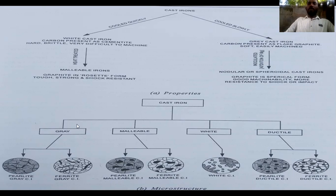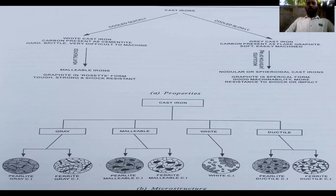In our previous class, we discussed white cast iron, gray cast iron, malleable cast iron, and nodular or graphite cast iron — their properties and applications. Iron is used mainly in three industries: construction, machine manufacturing, and bridges/architectural purposes.